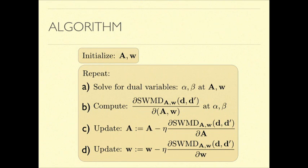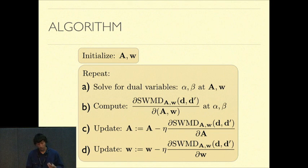What we'll do to solve for A and W is just initialize it in some way. We'll then solve for the inner optimization, alpha and beta, the optimal transport. We'll then take the gradient of the supervised word movers distance with respect to A and W at this optimal alpha and beta. And then update A and W with this gradient. And repeat until we're satisfied.